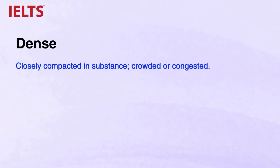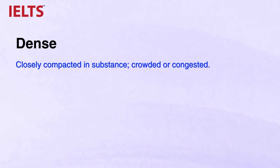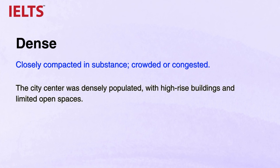Then there is the adjective DENSE, meaning closely compacted in substance — crowded or congested. The city center was densely populated with high-rise buildings and limited open spaces. You can use this adjective to describe areas with a high concentration of features, such as dense urban areas or dense vegetation cover.